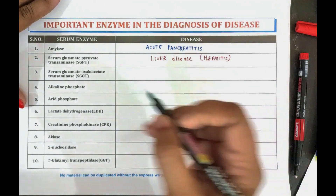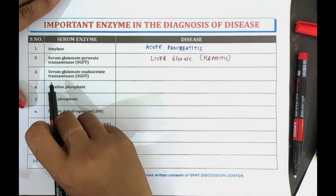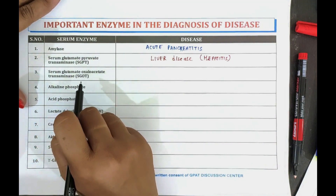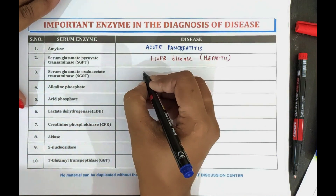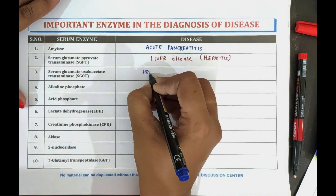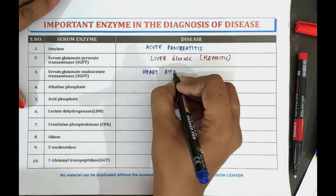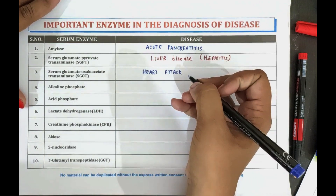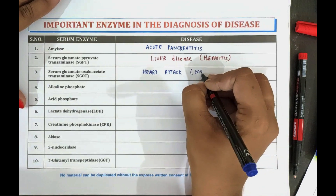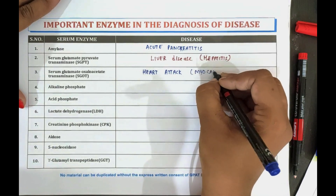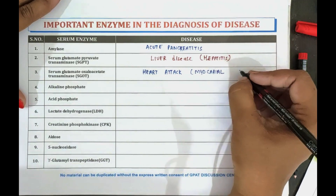Now coming towards the next one, which is serum glutamate oxaloacetate transaminase, that is SGOT. The SGOT enzyme is used to detect heart attack, that is myocardial infarction.